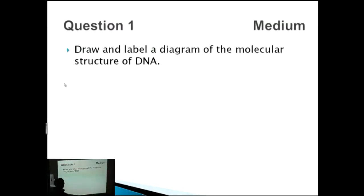For this question we have to draw and label a diagram of the molecular structure of DNA, and this question is a medium question, so we're looking for around about six to seven points usually to get full marks. So the way that I like approaching this is to actually draw two diagrams. Firstly one is an overview of the DNA molecule which shows the double helix and the helical structure, the double stranded and the helical structure.